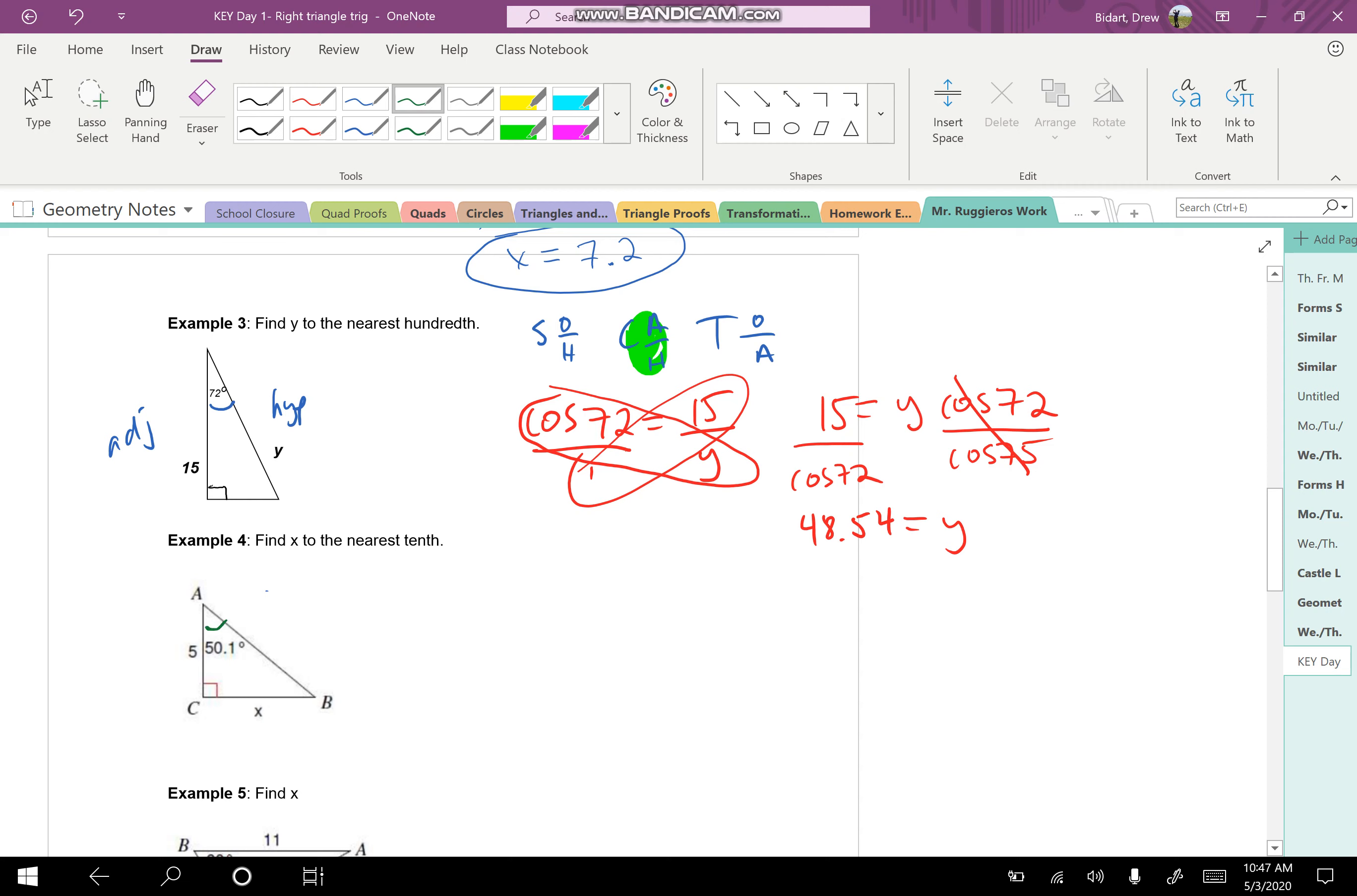All right, look at example number four. Now, the 50.1 degree angle is the angle in question. Now, never use the 90. It's always one of the other angles that's given to you. So with respect to that angle, x is going to be opposite it. AB is the hypotenuse.